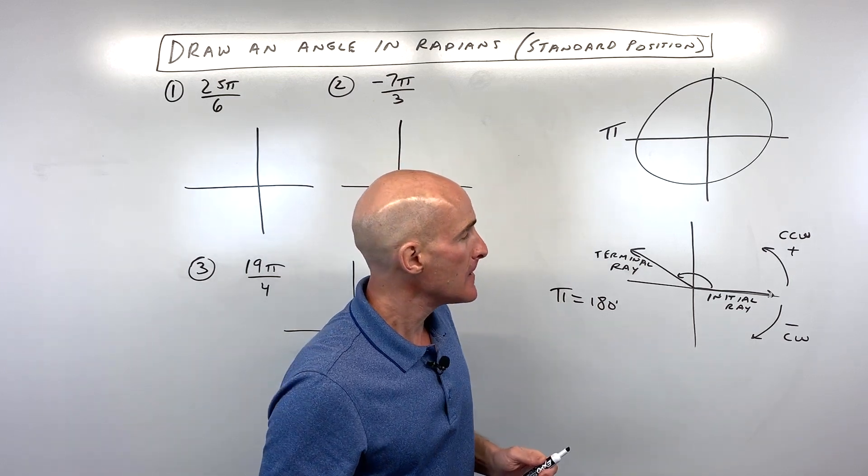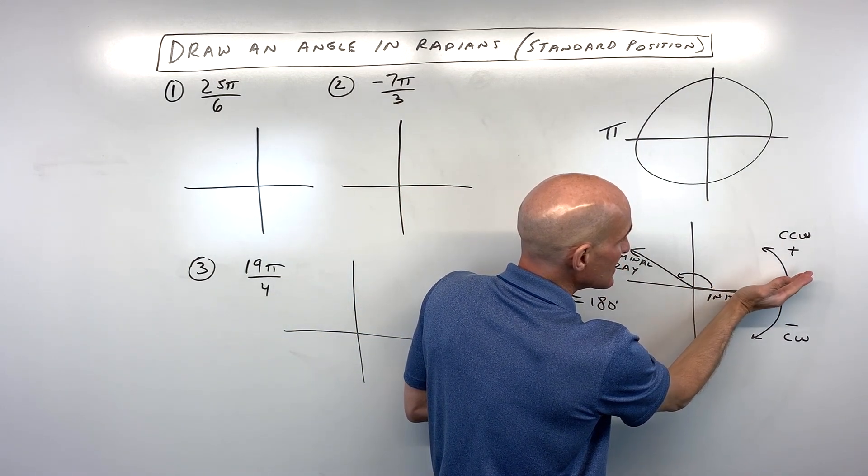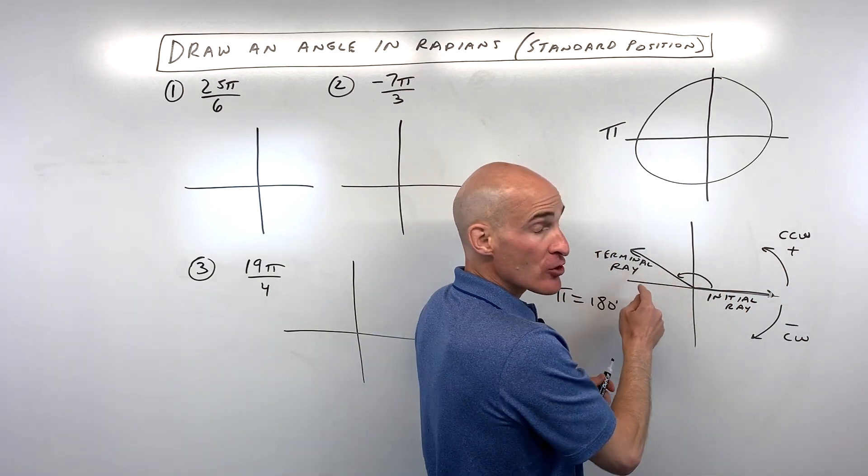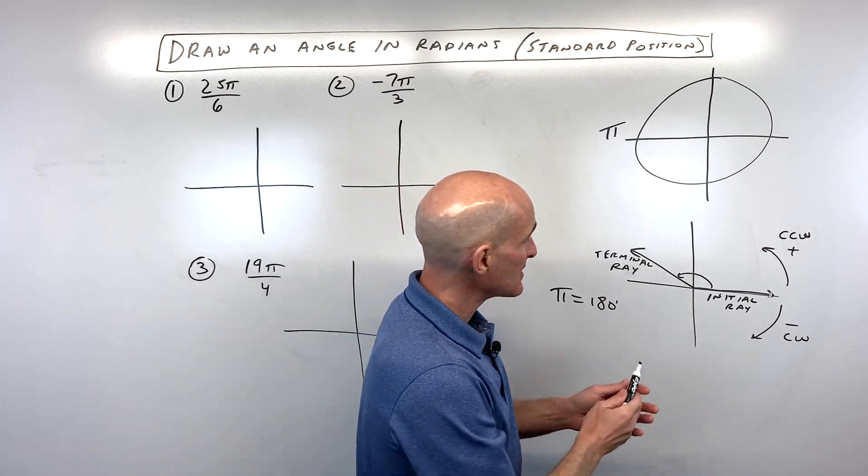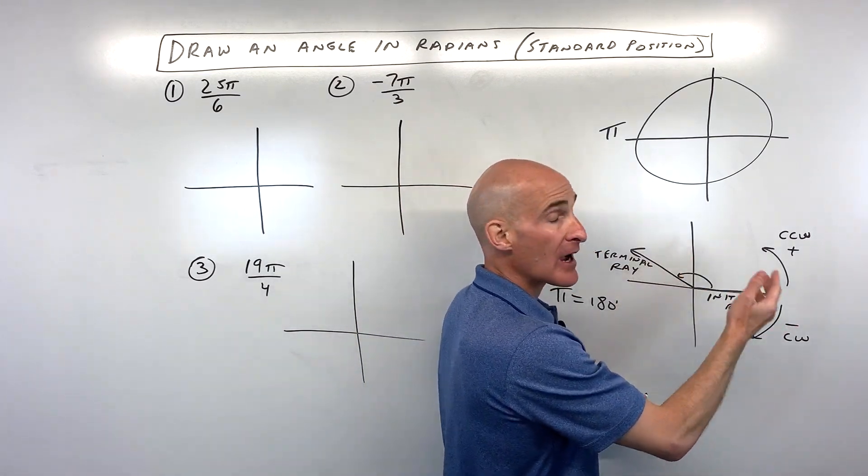It's a little counterintuitive. The main thing is you want that initial ray along the positive x-axis, and then wherever the ray or the spinner ends up, that's what we call the terminal ray. That's where it terminates or stops. And then we just draw an arrow showing the direction, whether we were going counterclockwise or clockwise.